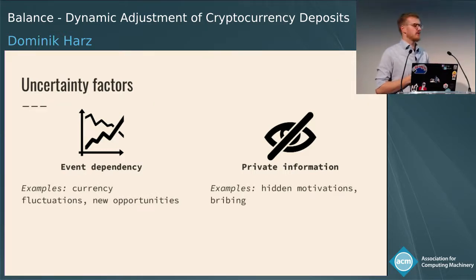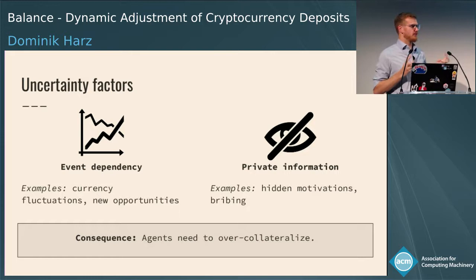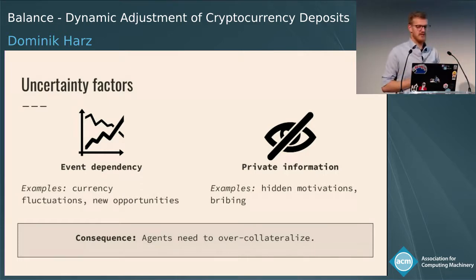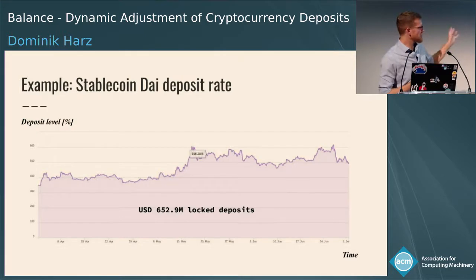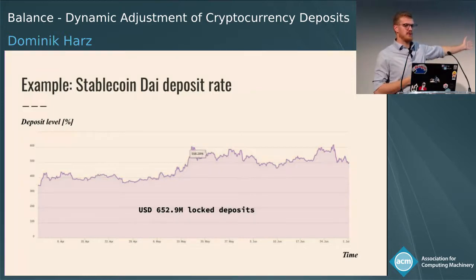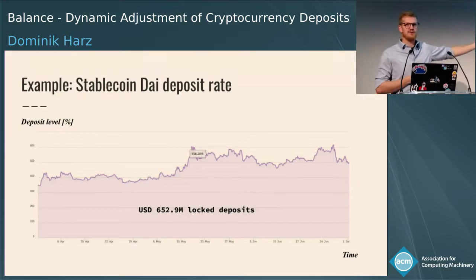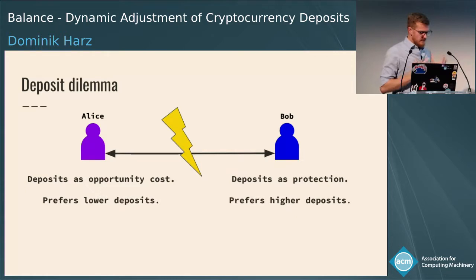We heard earlier this morning that bribing is a thing — if Alice gets a bribe to misbehave, we need to account for that too. How this is usually handled in practice is that agents need to over-collateralize: instead of paying 100% collateral, you typically pay a higher amount. This happens in practice — for example, in the stablecoin DAI there's around $650 million US dollars locked with a deposit ratio of between 350% and 600% over the last year. This is real money and a real opportunity cost for agents like Alice.